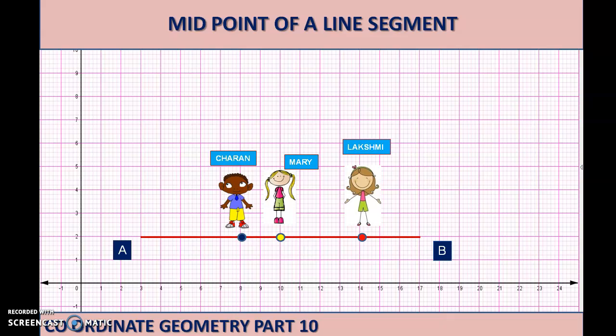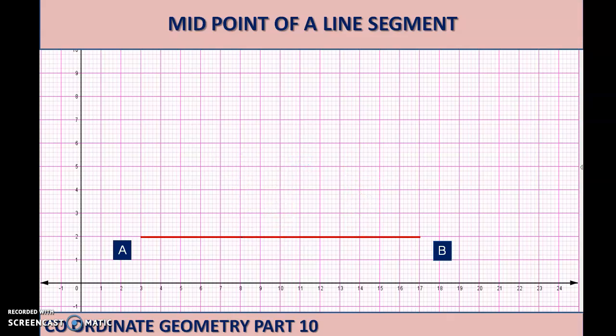Let us take a case with 3 children — Charan, Mary and Lakshmi. Pause this video for a while and tell me who is exactly standing in the middle of the line segment. Now let us check each case individually. Is Charan standing in the middle of line segment AB? No, he is not.